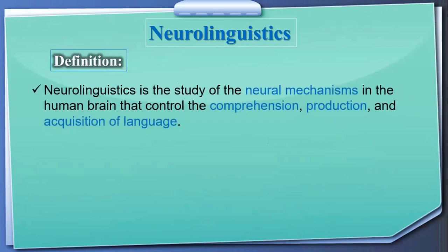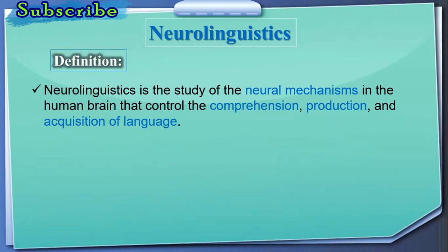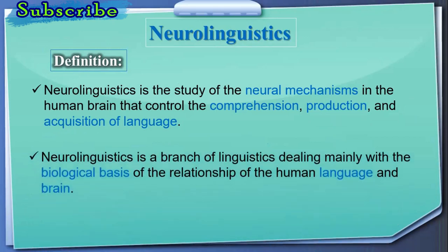Here are other definitions. Neurolinguistics is the study of the neural mechanisms in the human brain that controls the comprehension, production, and acquisition of language. It is also defined as a branch of linguistics dealing mainly with the biological basis of the relationship of human language and brain — concerned with the physical entity of the brain as the biological basis of language.